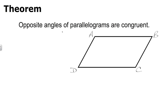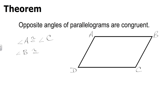The next property is the idea that opposite angles of a parallelogram are congruent, very similar to the idea that opposite sides are congruent. For this diagram, A and B are consecutive angles and A and D are consecutive angles, so A and C must be opposite angles. We conclude that angle A is congruent to angle C, and angle B is congruent to angle D.